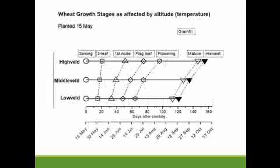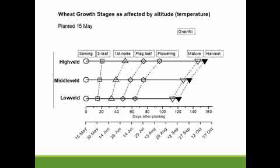Altitude has a significant effect on the time to reach these growth phases. The high veld, being cooler, takes a long time to flowering and maturity. The low veld, being warmer, takes a short time. So on the high veld around Harare and Marondera, it might take 90 to 100 days to flower with a mid-May planting, and about 140 to 150 days to harvest. Whereas in the low veld, wheat will take about 65 to 70 days to flowering and about 110 to 120 days to maturity.